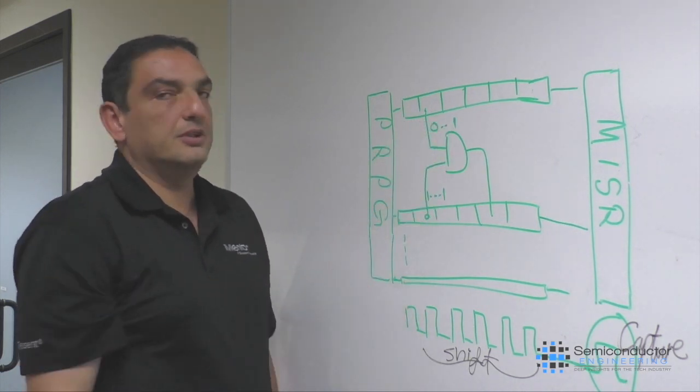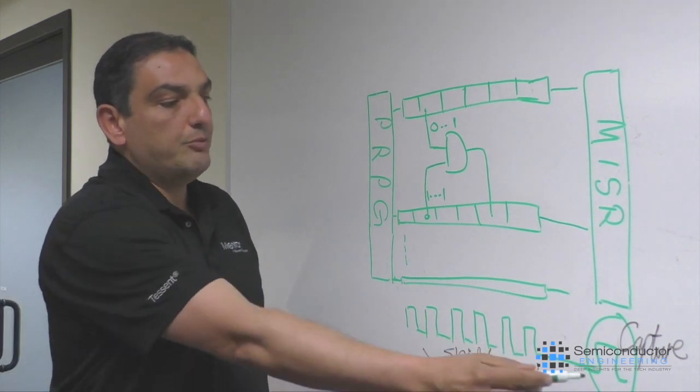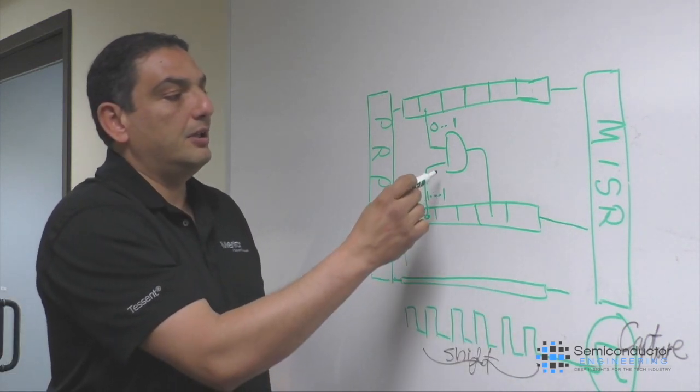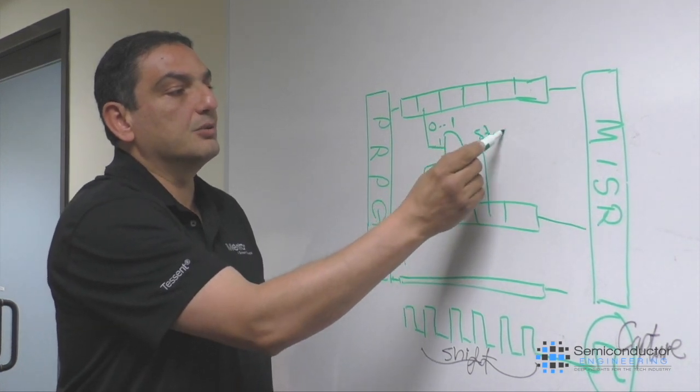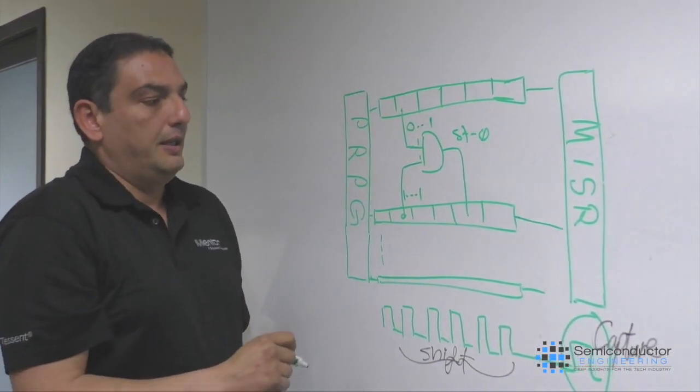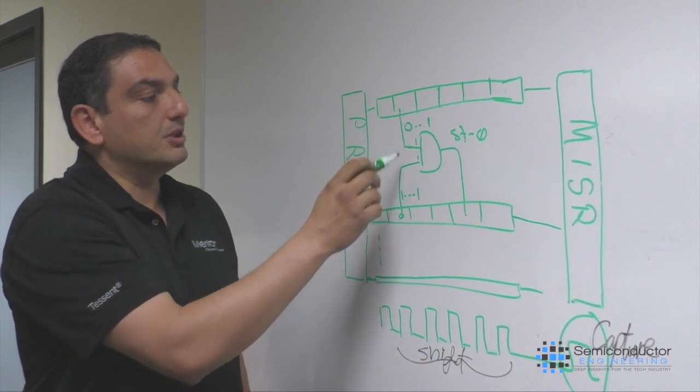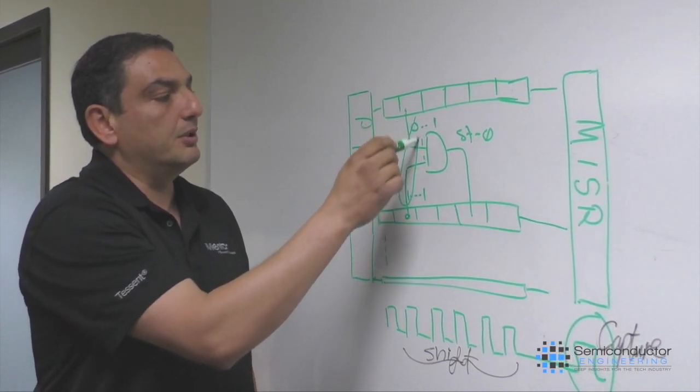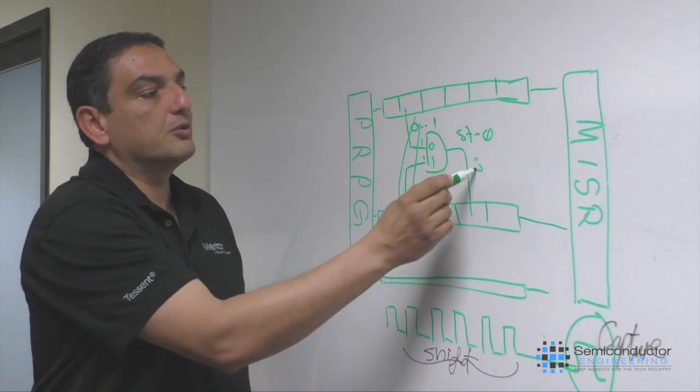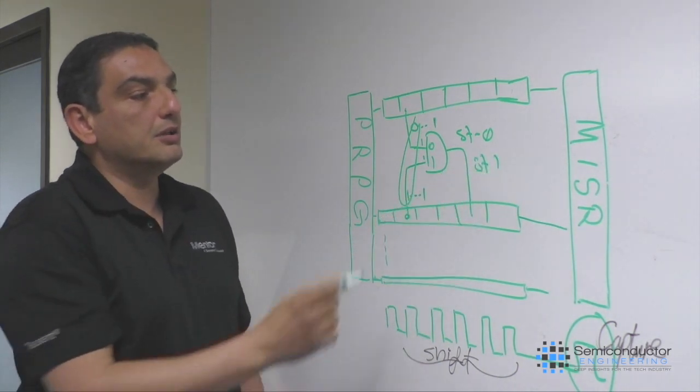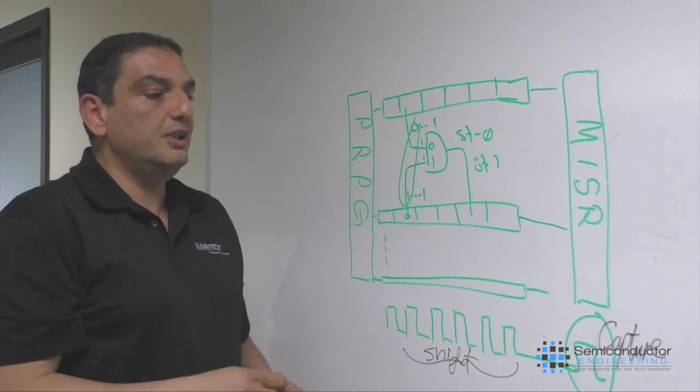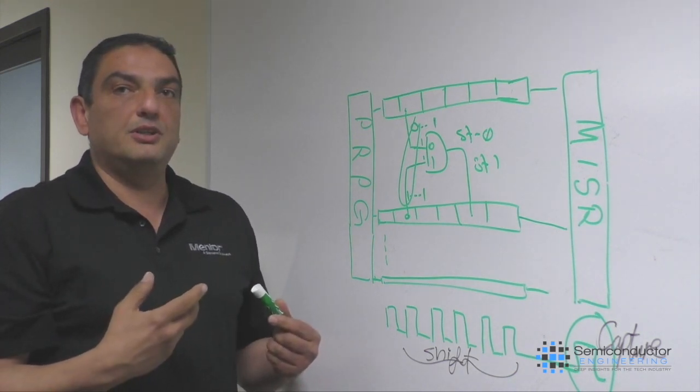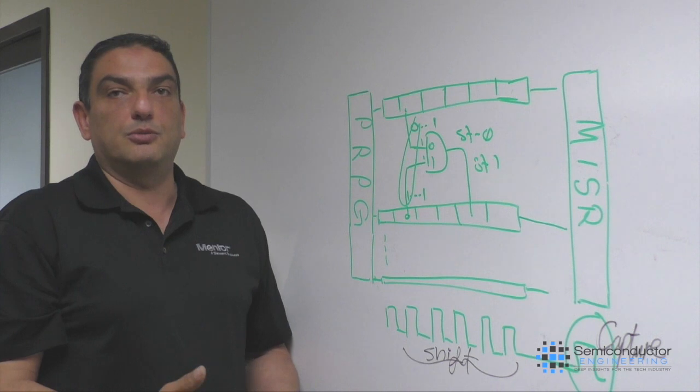But we could also be testing for a stuck-at-one if we consider this one, which is zero one here, which means we are testing for a stuck-at-one. The problem is we cannot capture this response with the traditional logic BIST circuitry, and here's where the new technology comes into play.